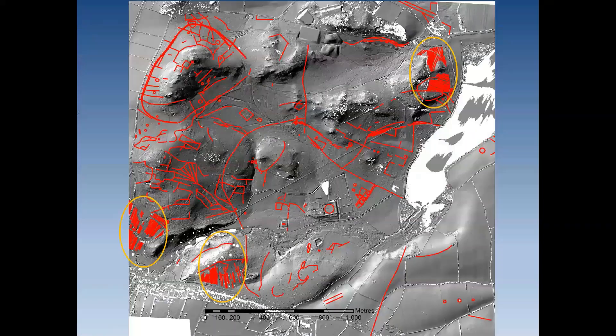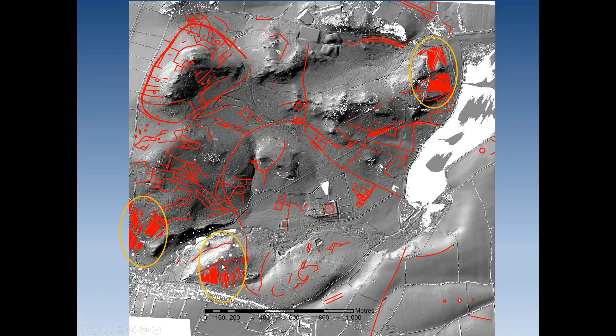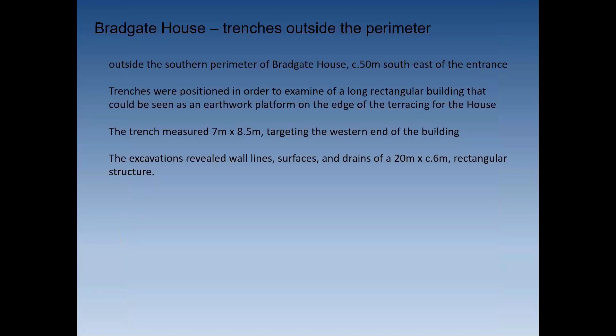The areas of ridge and furrow on the edges of Bradgate Park recorded by LiDAR and by Tony and Fred will always certainly belong to open fields — in the northeast near Cropston, and in the southwest near Newtown Linford. The areas of ridge and furrow should be understandable within a field system, as that is how they were made.